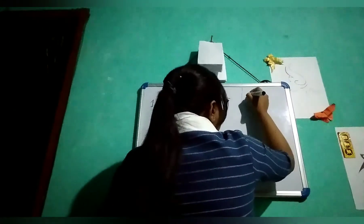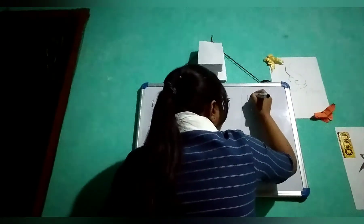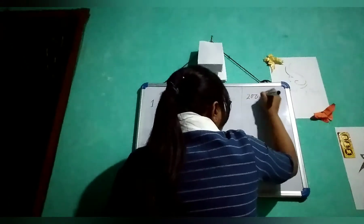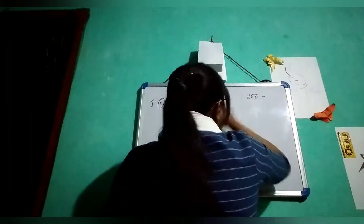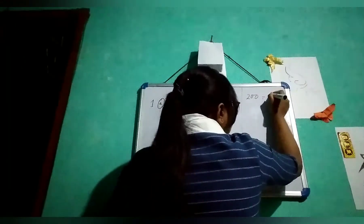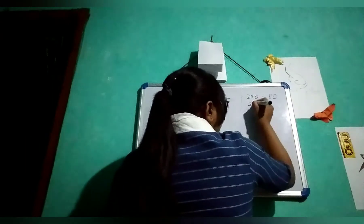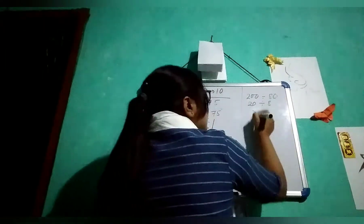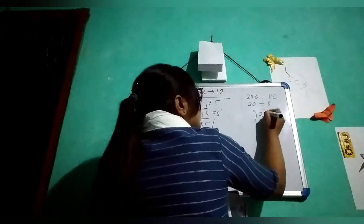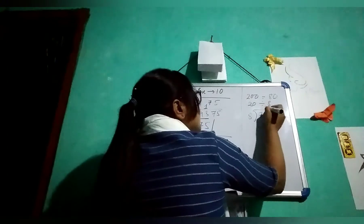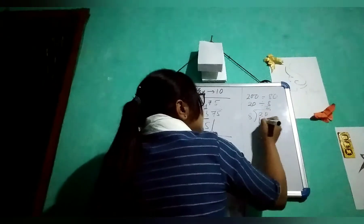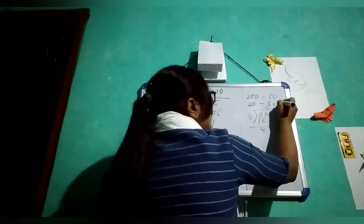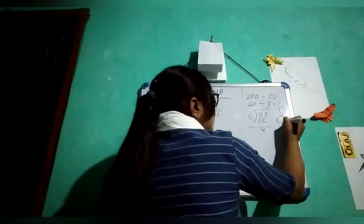You have 187. You do a round-off: it will be 200 divided by 75. If you do that, it will be 8. So it becomes 20 divided by 8. You will take 2, giving 16. So 2 is the estimated quotient.